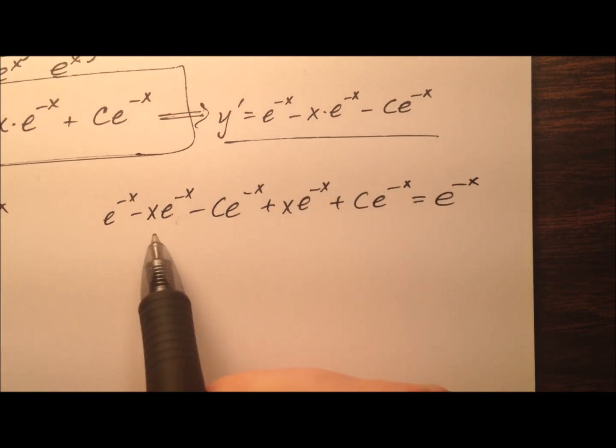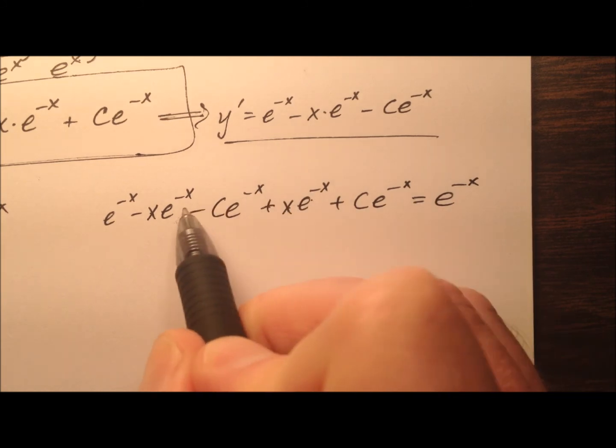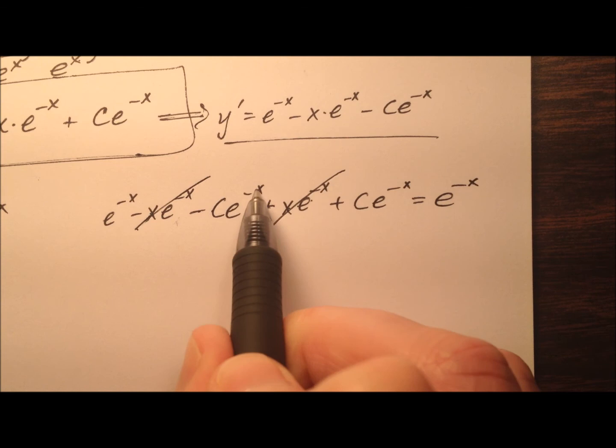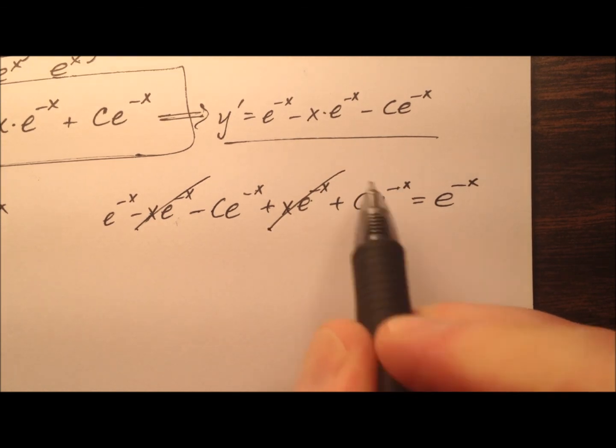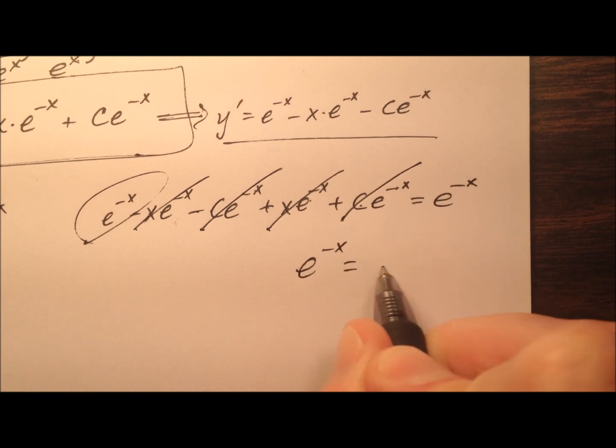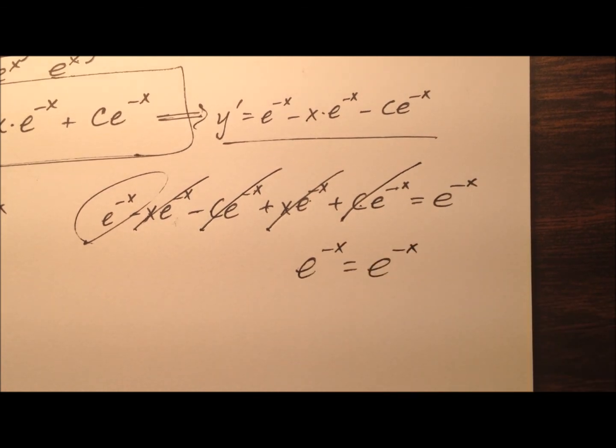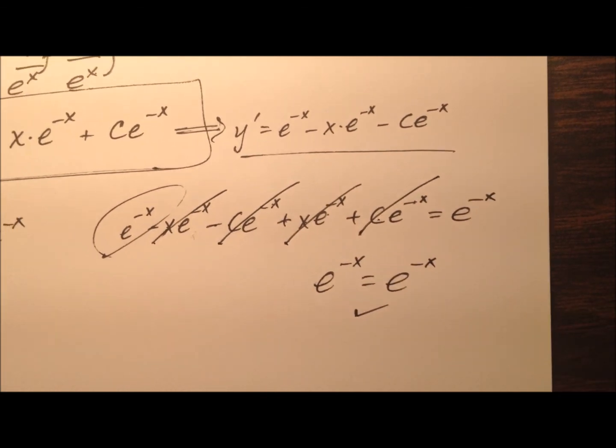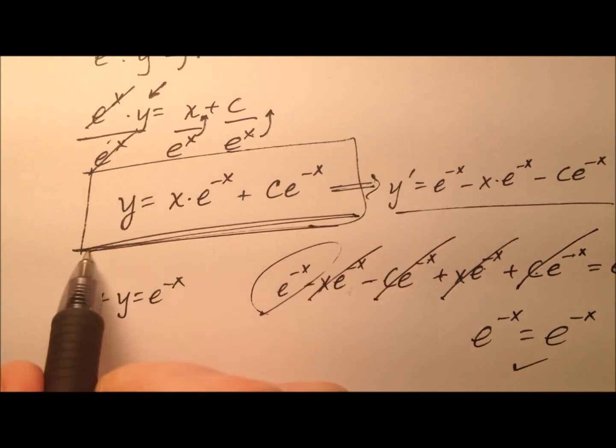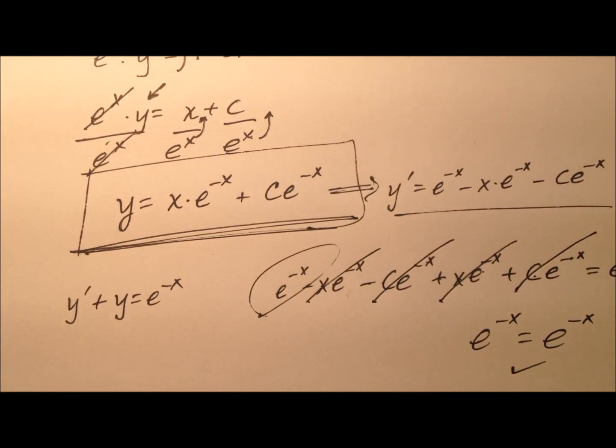So minus x e^(-x) and then plus x e^(-x), those will cancel. And negative c e^(-x) and a positive c e^(-x), those will cancel. And it looks like I am left with e^(-x) = e^(-x), so it works. So this is the general solution for my original differential equation.